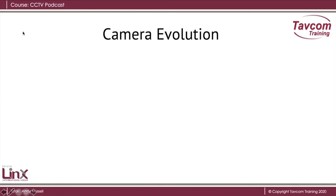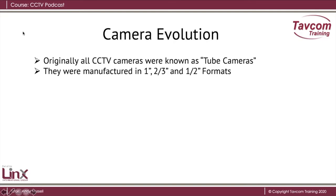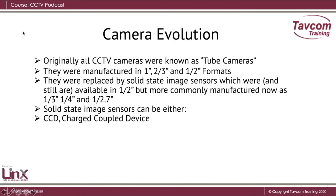Starting off with the camera evolution. Originally all CCTV cameras were known as tube cameras. They were manufactured in one inch, two third, and half inch formats. They were replaced by solid state image sensors which were and still are available in half inch, but more commonly manufactured now as third, quarter, and one-two-point-seven inch. Solid state image sensors can either be CCD, which is a charged coupled device, or CMOS, which is a complementary metal oxide semiconductor.